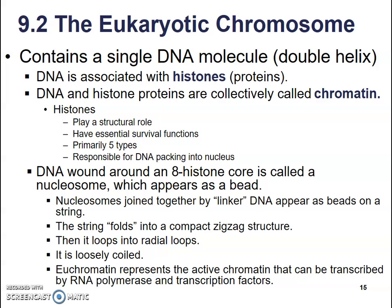Euchromatin represents the active chromatin that can be transcribed — that means a copy of RNA can be made of it. So it's loosely coiled so that it can be copied.